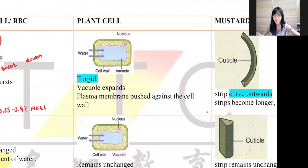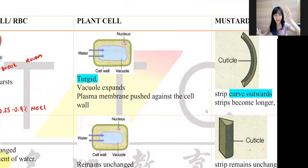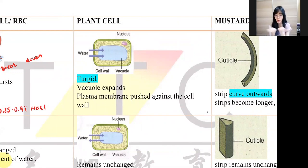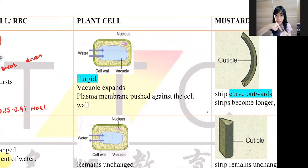Next we have plant cell. Plant cell is a very special cell because it has a cell wall, so it's not going to burst. Same thing: I have a plant cell and a hypotonic solution — distilled water. Distilled water has more water, so the water diffuses into the cell. As it diffuses in, the vacuole will expand in size.